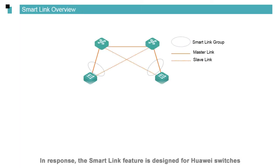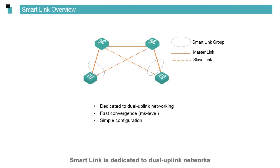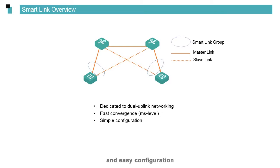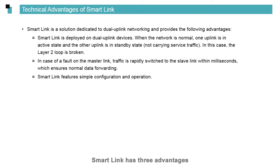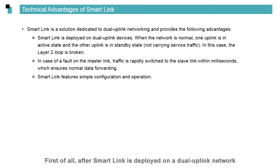In response, the smart link feature is designed for Huawei switches. Smart link is dedicated to dual uplink networks, which features convergence speed of milliseconds and easy configuration. To address the loop issue, we need to deploy smart link only on two switches shown in this figure. Smart link has three advantages. First of all, after smart link is deployed on a dual uplink network, one link is blocked, avoiding loops.